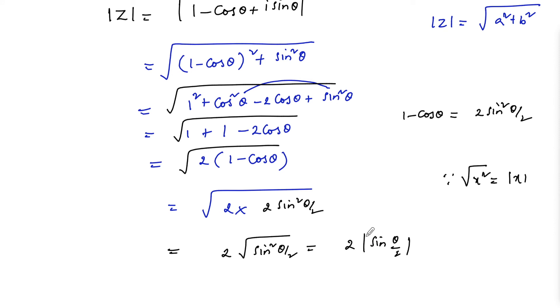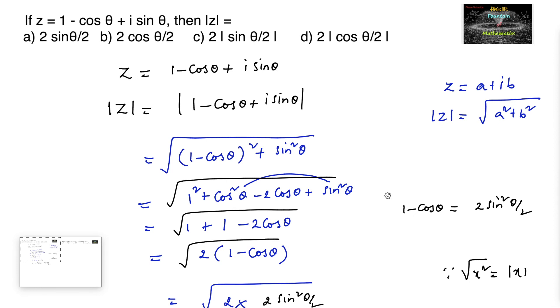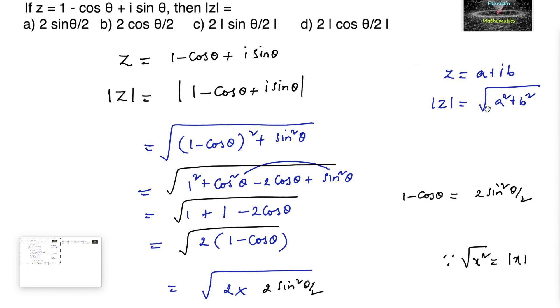It depends upon the quadrant where theta lies — sine can be positive or negative — so sin theta by 2 can vary. So we can write 2 times mod of sin theta by 2 as the answer. The third option is the right answer.